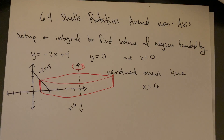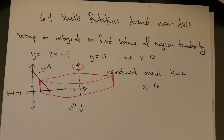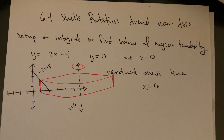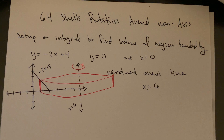The one thing we didn't cover for shells yet is what it looks like to do a shells-style volume when you rotate around a line that's not one of the axes. We did something similar in 6.3, which had an effect on the radius and made some things washers that maybe wouldn't have been otherwise. This is going to have a similar impact — it's going to affect the radius. Let's look at an example.